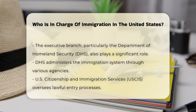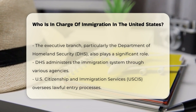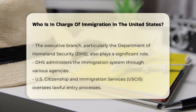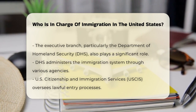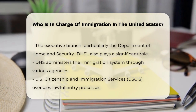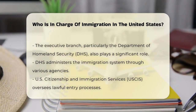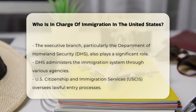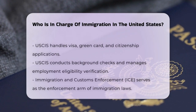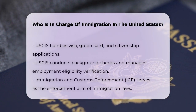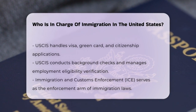But Congress isn't the only player here. The executive branch, particularly through the Department of Homeland Security (DHS), also plays a crucial role. DHS is responsible for administering the immigration system, and it includes several key agencies like U.S. Citizenship and Immigration Services (USCIS), U.S. Customs and Border Protection, and Immigration and Customs Enforcement (ICE).